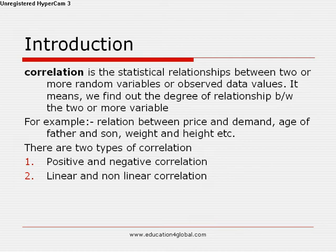In negative correlation, if one variable is increased, then the other variable is decreased. It means in negative correlation, the variables move in opposite directions. In positive correlation, the variables move in the same direction.